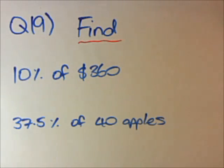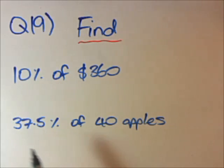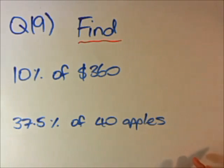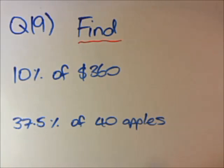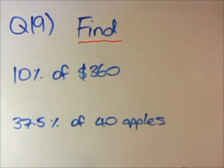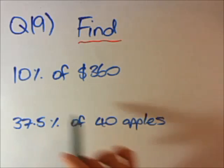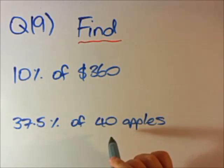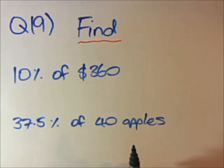Question 19: we want to find 10% of $360, or 37.5% of 40 apples. These are lifelike scenarios — for example, you might only need 10% of a house's value as a deposit, so we want to find what 10% actually is. This will be easily solved using what we've done in the last few questions.